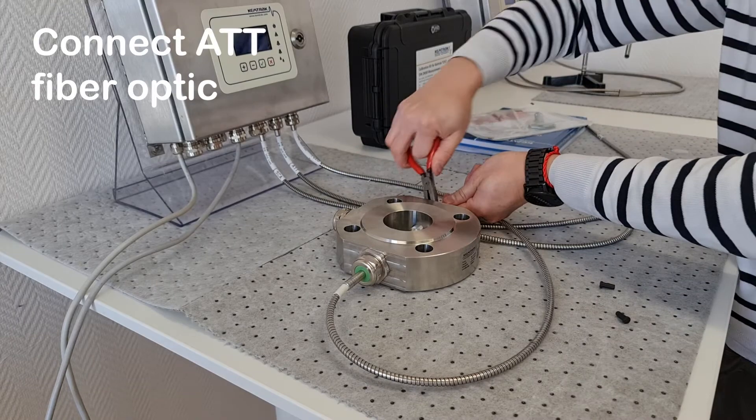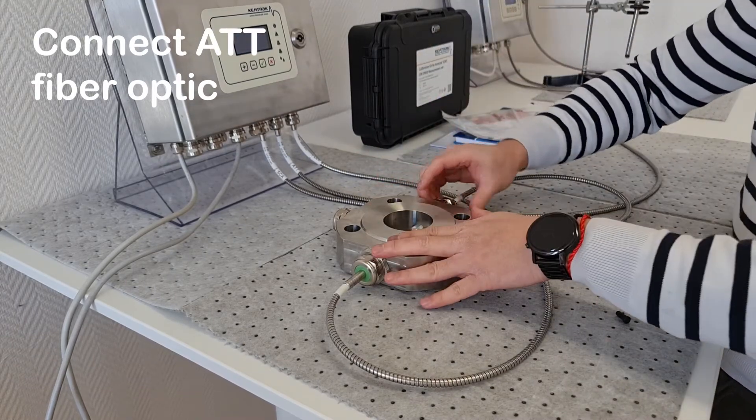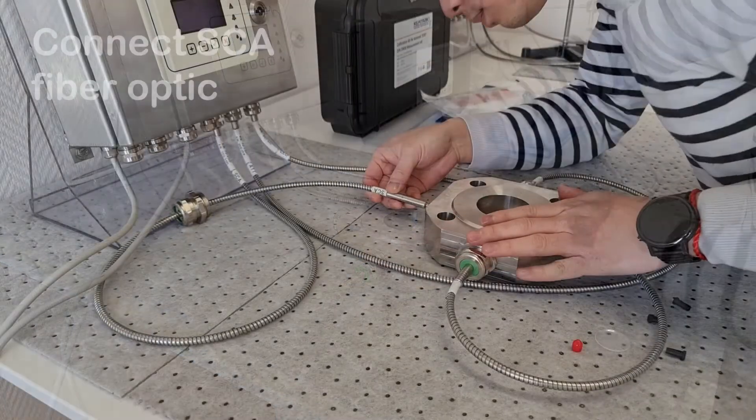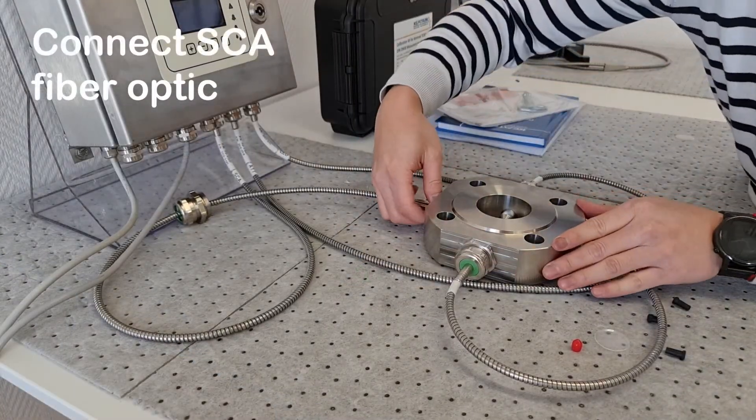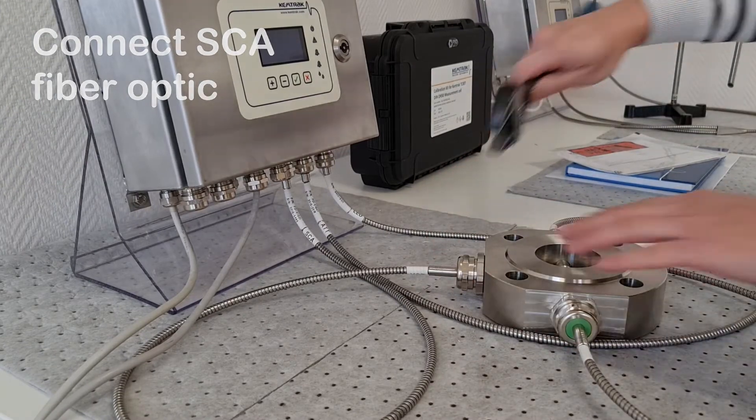The fiber marked ATT should be connected directly opposite to the cable marked LEAD. The fiber marked SCA should be connected to the measurement port located at 90 degrees to the other ports.